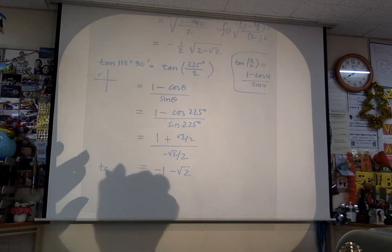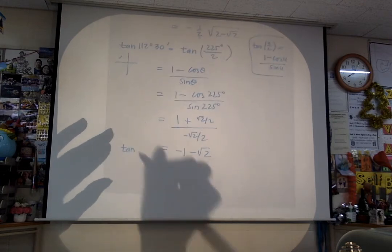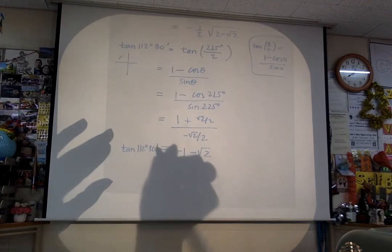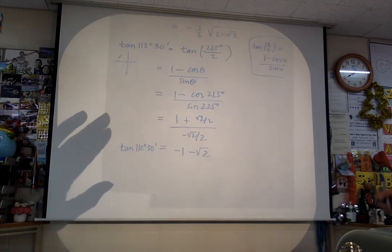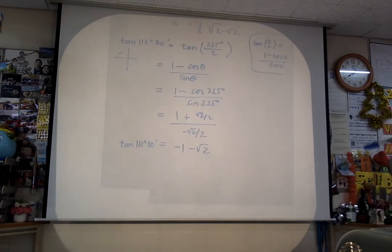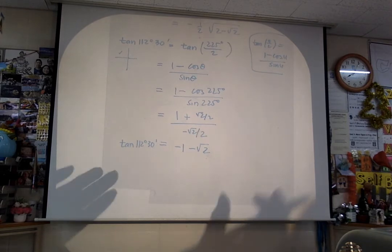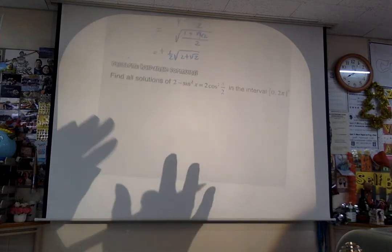So the tangent of this angle, 112 degrees and 30 minutes, ends up being negative 1 minus root 2 — that's what you get using the half-angle formula. Stop the video and be sure you digest that before you move on.